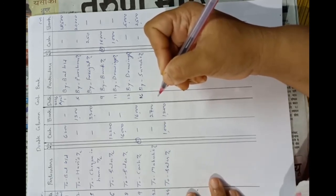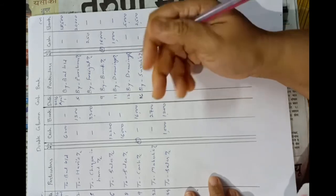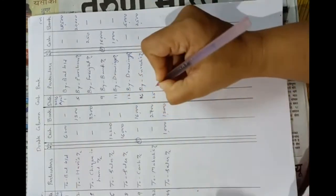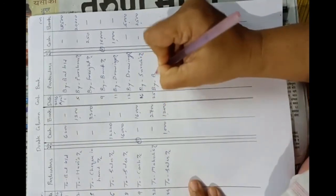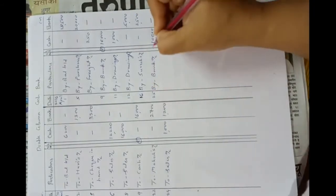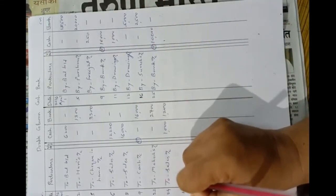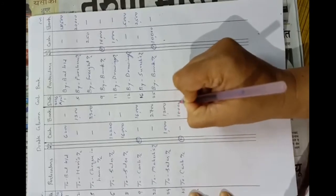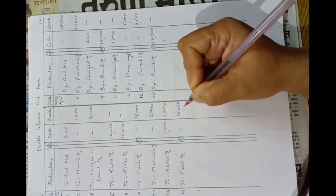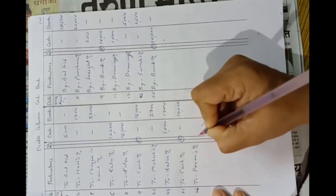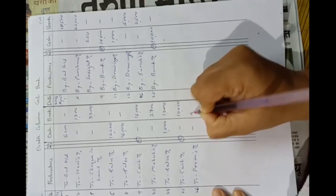On 25th, paid into bank Rs. 10,000 — this is a contra entry. First withdraw Rs. 10,000 from cash box: by bank account, Rs. 10,000; then deposit into bank: to cash account, Rs. 10,000 in bank column. On 26th, received a check from Prem and sent it to the bank immediately — to Prem's account, bank column, Rs. 4,150.